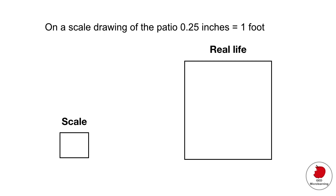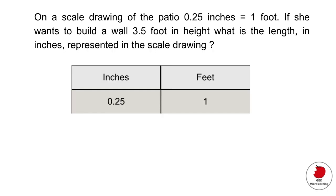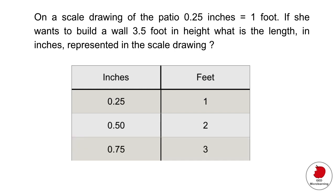Without a calculator you can set up a table. They're telling us that 0.25 inches is equal to one foot. If you asked how many inches is two feet, all you have to do is double that amount — add 0.25 plus 0.25. It's like going from one quarter to two quarters, or 25 cents to 50 cents. So now we know 0.50 inches equals two feet. For three feet, add 0.25 again — that gives you 0.75.